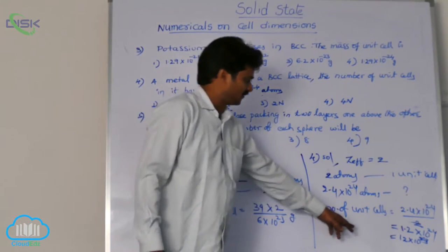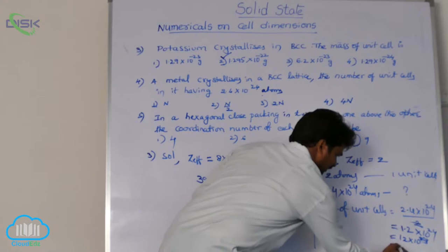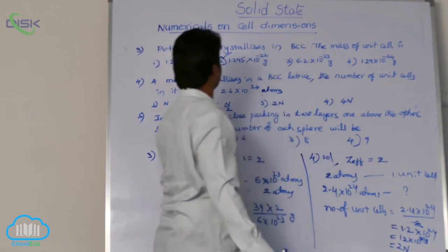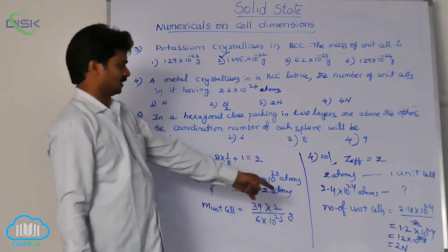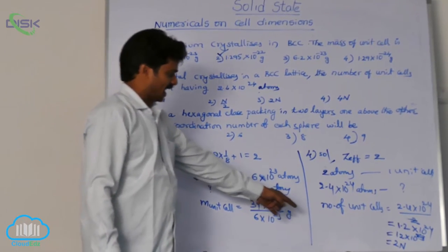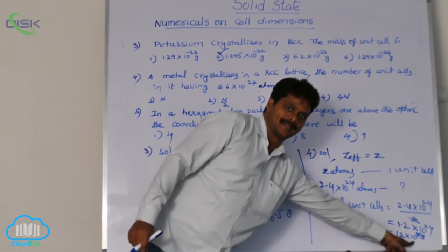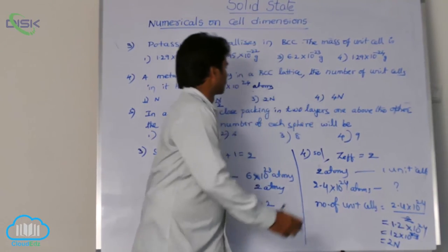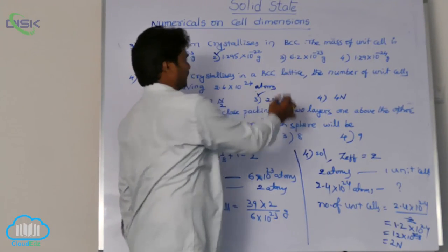12 means we can write it as 2 into Avogadro number. So it is equal to 2n. Now the answer is 2n where n is 6 into 10 power 23. It is double the Avogadro number. So answer is second option.